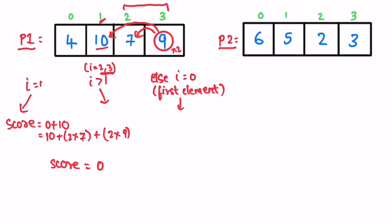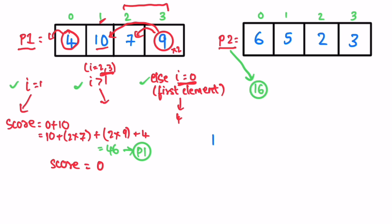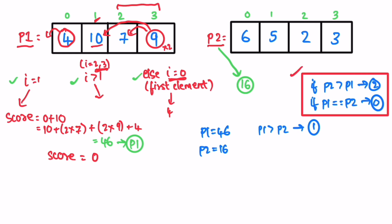In the else block, i equals 0, which is the first element. There is nothing to its left, so whatever value is in the first element is added directly to the score — here it is 4. After calculating the entire array, p1 score equals 46. Applying the same logic to p2 gives a score of 16. Since p1 (46) is greater than p2 (16), we return 1 as the output.